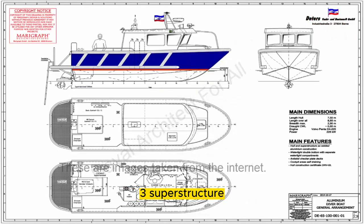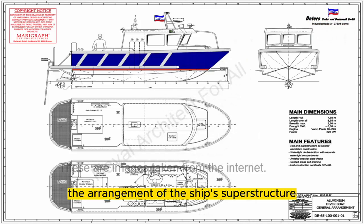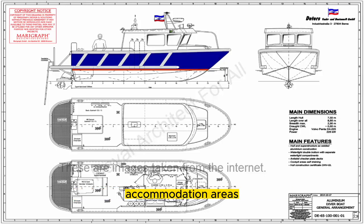3. Superstructure: The arrangement of the ship's superstructure, which includes features such as the bridge, accommodation areas, and any other elevated structures.